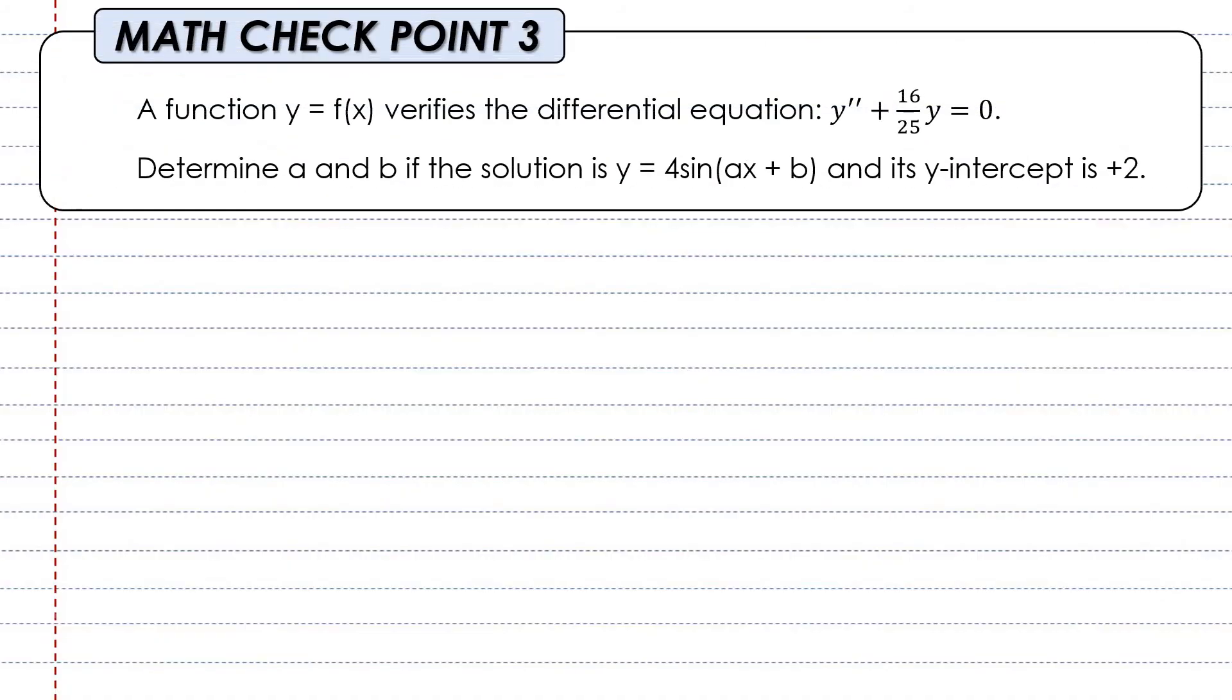Our third checkpoint applies differential equation techniques. Math checkpoint 3: A function f(x) verifies the differential equation y'' + 16/25 y = 0. Determine A and B if the solution is y = 4 sin(ax + b) and its y-intercept is +b. It's a pretty interesting exercise. Try to solve it relying on the previous slide. You don't need to memorize anything—just check what we discussed before and mimic the solution.